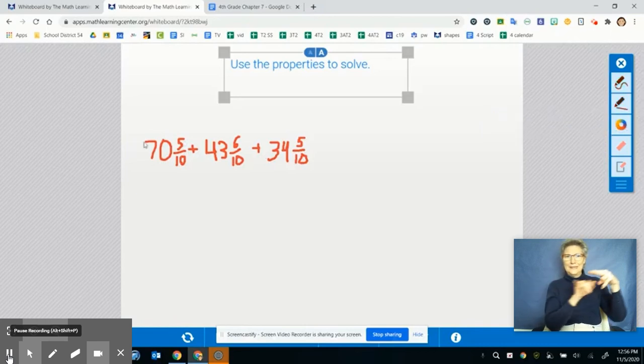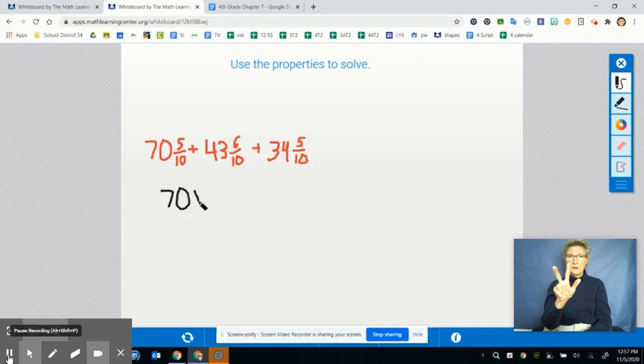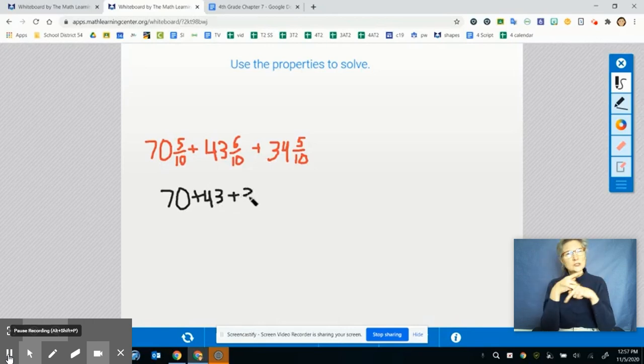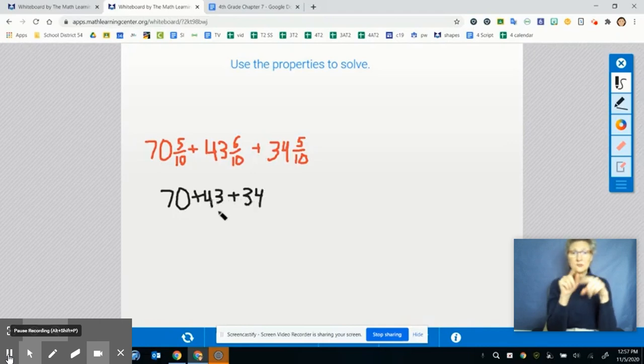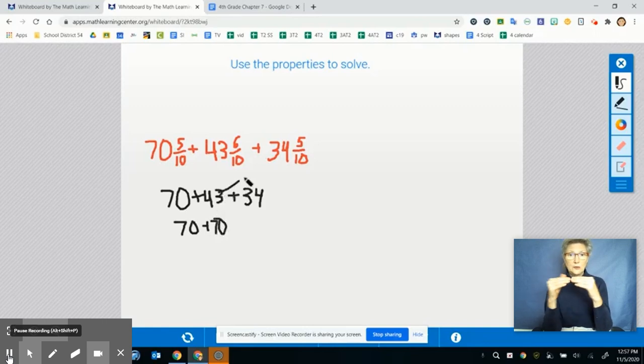So if I take 70 and I add 43 and I add 34, let's talk about some mental math strategies to help me with this. I know that I have 40 and 30 here for another 70. So if I take this it really becomes 70 plus 70 and then I have 3 plus 4, I have 7 left.